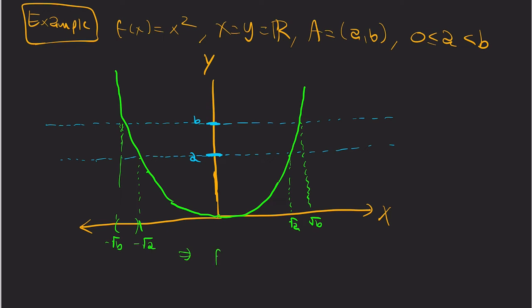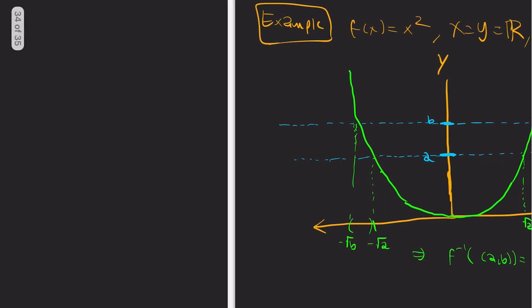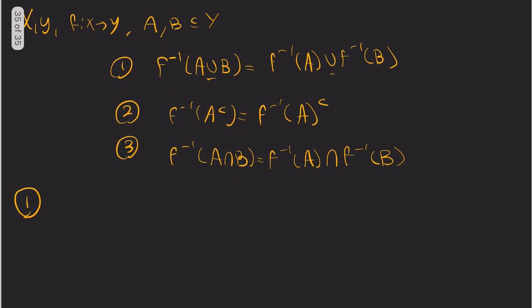And that's radical b. So the preimage of (a,b) is negative radical b, negative radical a, union radical a, radical b. So if this is your first time seeing this, try to think of some other examples or re-watch this section. Because, again, this intuition is sort of essential for Lebesgue integration.